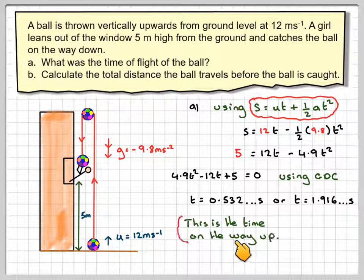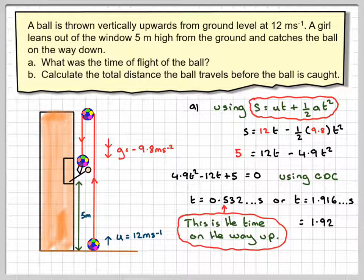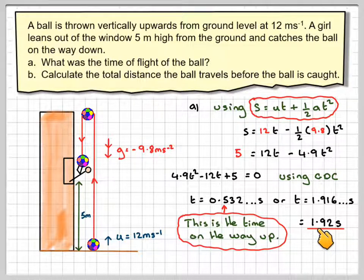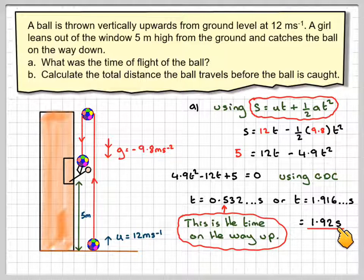So this is the time on the way up, but we want to know the time all the way down. So rounding off to three significant figures, that would be 1.92 seconds.